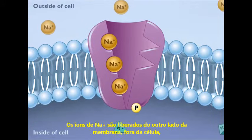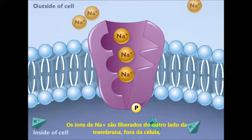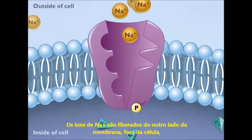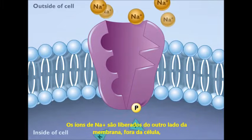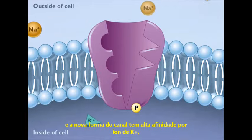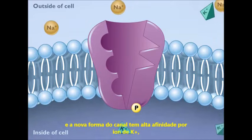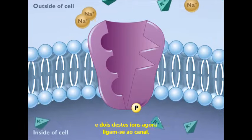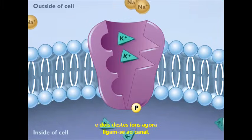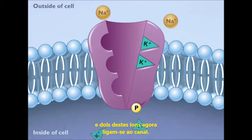The sodium ions are released on the other side of the membrane, outside of the cell. The new shape of the channel has a high affinity for potassium ions, and two of these ions now bind to the channel.